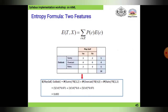The entropy formula is again applied using the play golf example for the outlook in a weather forecast. Features include sunny, overcast, and rain conditions, with play golf probabilities of yes or no. All these figures will be discussed in detail in the later slides.